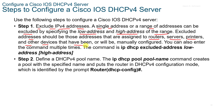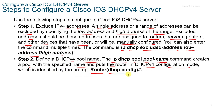Excluded addresses should be those assigned to routers, servers, printers, and other devices that have been or will be manually configured. You enter the 'ip dhcp excluded-address' command with the low and high address. In step two, we define the v4 pool name. The 'ip dhcp pool <pool-name>' command creates a pool with a specified name and puts the router in DHCPv4 configuration mode, identified by the prompt 'Router(dhcp-config)#'.